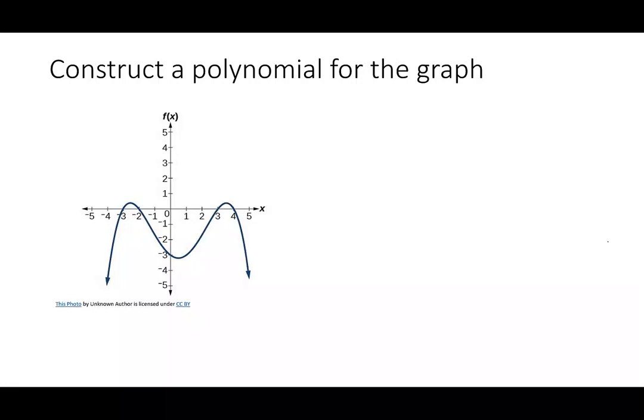The end behaviors match, so that says that this should be an even function. So my degree is going to be 2, 4, 6, something like that. So let's go through and look at each of the intercepts. I have a 4, it crosses. A 3, it crosses.